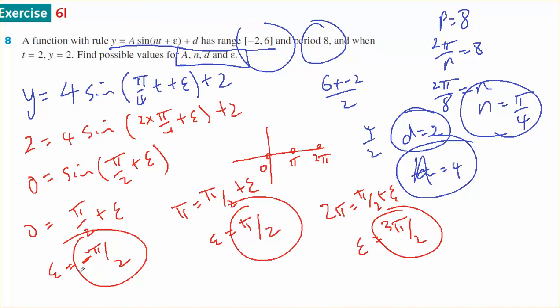There are three possible answers, and there are many, many more. I'm going to say that a equals 4, n equals π on 4, d equals 2, and e equals π on 2 as one of the many answers it could be.